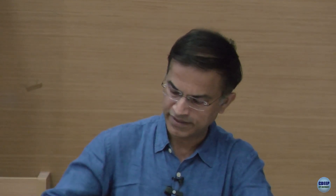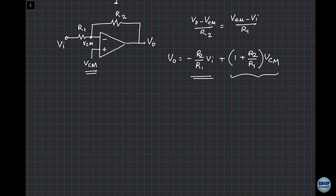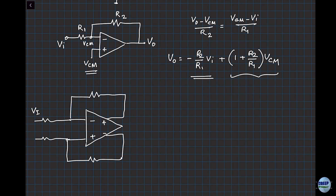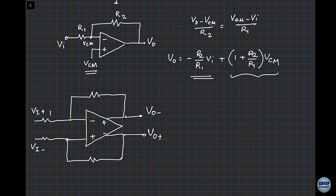Now let's do the same analysis with the fully differential circuit. If I had to do this fully differentially, I would have negative/positive/positive/negative at the inputs, with VI plus, VI minus, VO minus, and VO plus. I've just made the circuit fully differential — I had one output, now I have a second output which is exactly opposite. Let's make all resistors equal to R.